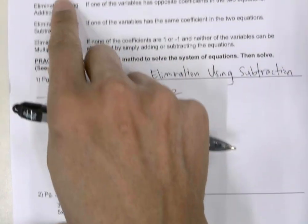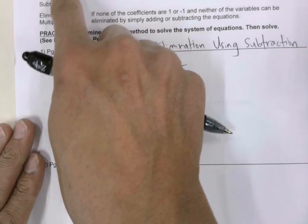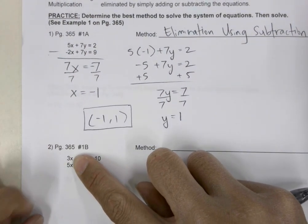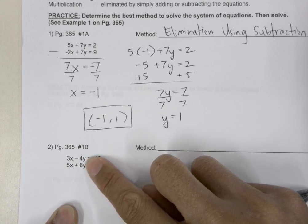In this case, we don't want to use graphing because we want an exact solution. Substitution requires coefficients of 1, and you can see here we don't have coefficients of 1. In these two, we don't have a coefficient of 1.